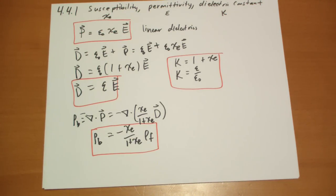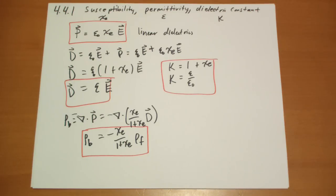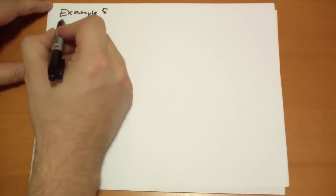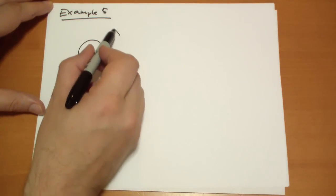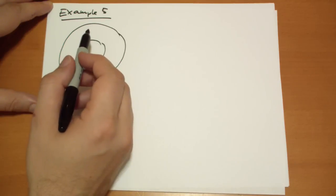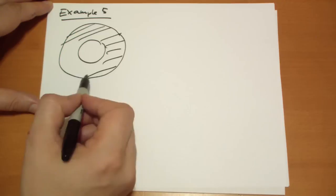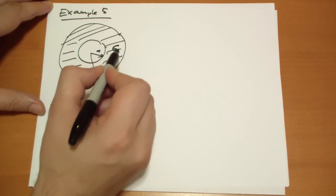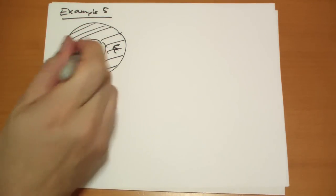Here's a simple example — Example 5. You have a conducting sphere of radius A surrounded by a dielectric shell of permittivity ε out to radius B. We label A as the inner radius, B as the outer radius, and ε as the permittivity of the dielectric. We want to find the potential at the center of the sphere.